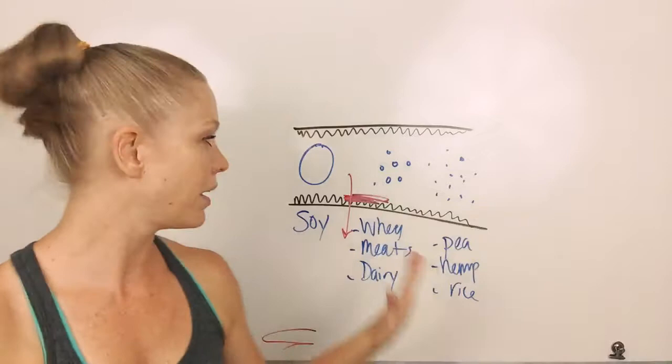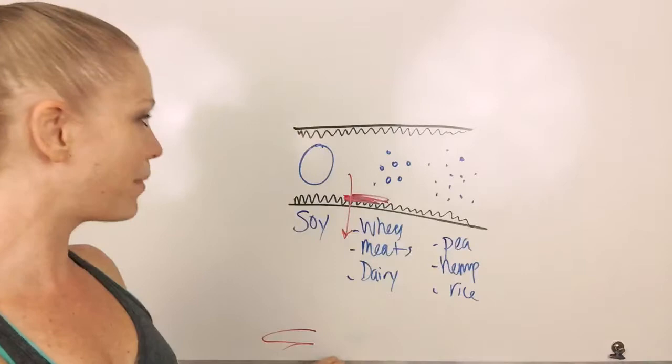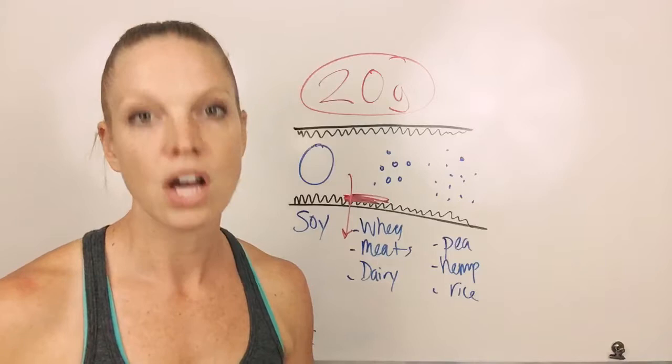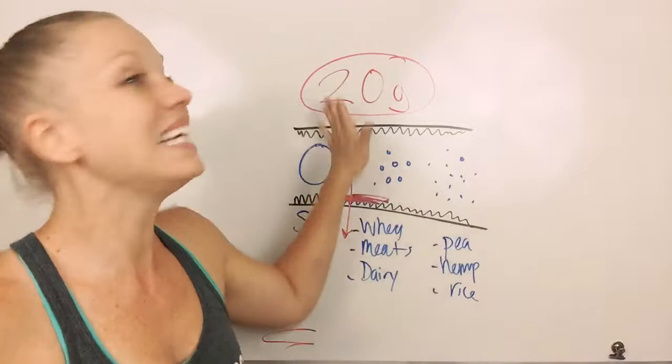Bioavailability, meaning your body can actually recognize it and use it. Very key number to remember here, the number 20. 20 grams of protein is the number that your body needs to actually start protein muscle synthesis. So, if you're getting some type of snack or meal or whatever, you want to make sure you're at least hitting that 20 grams.